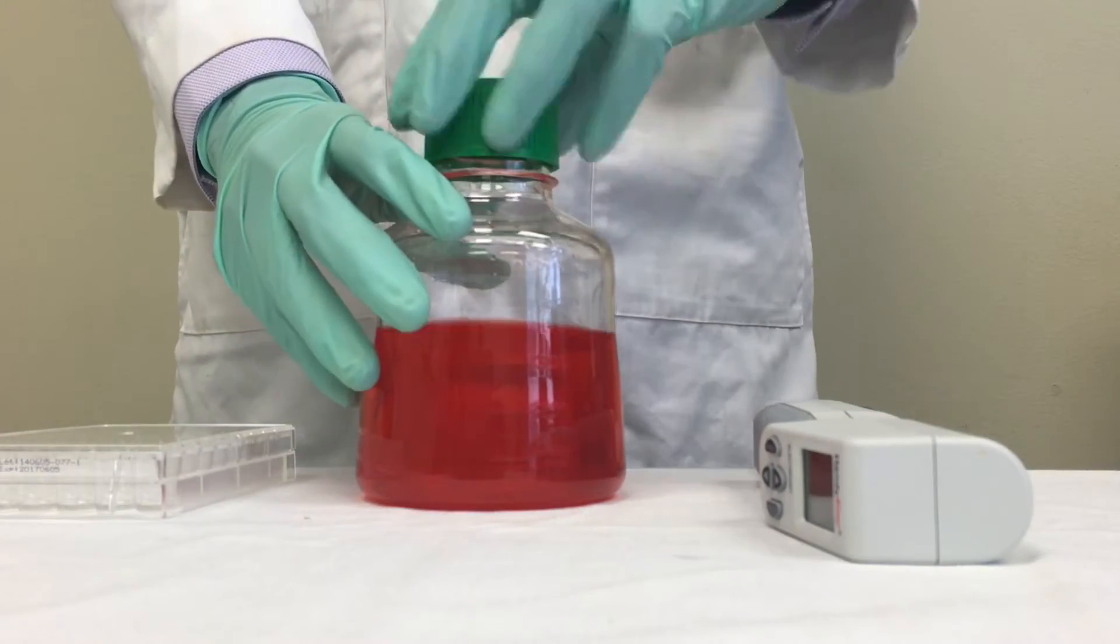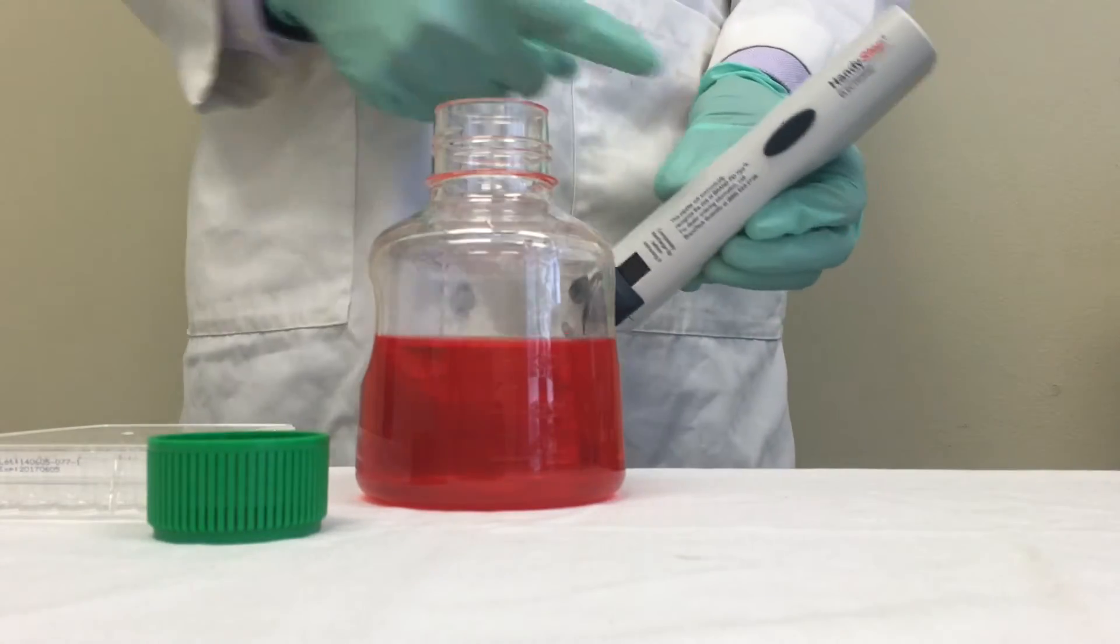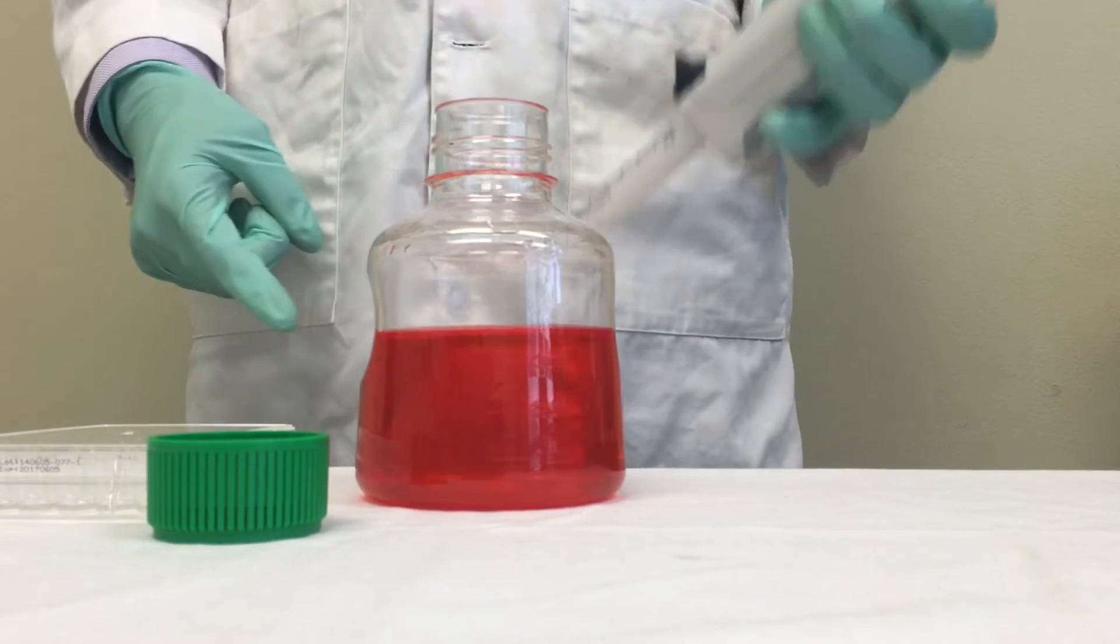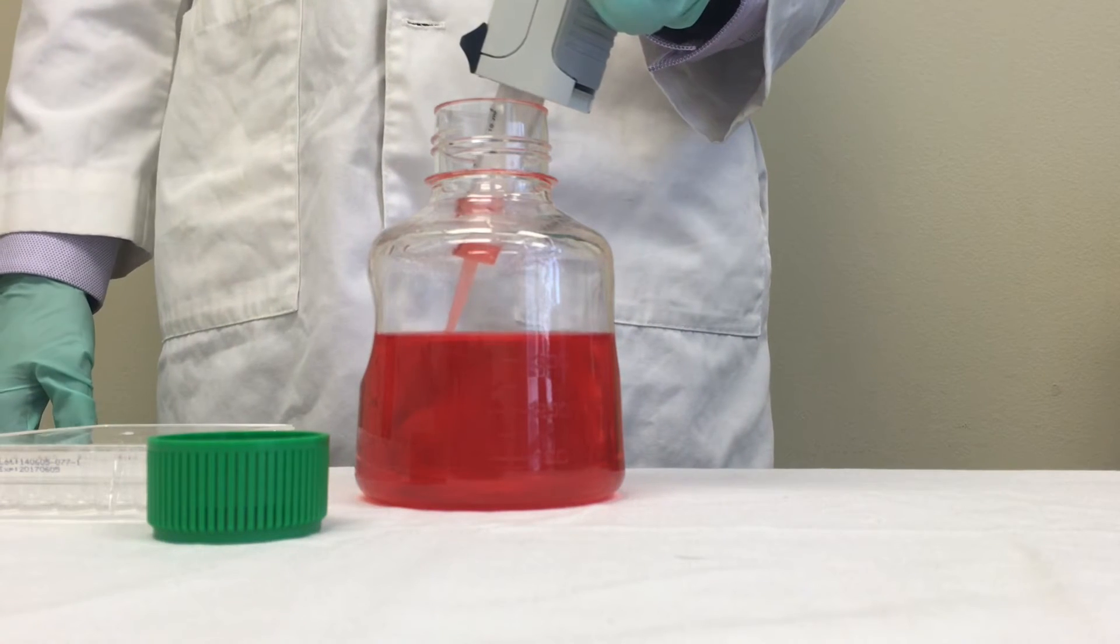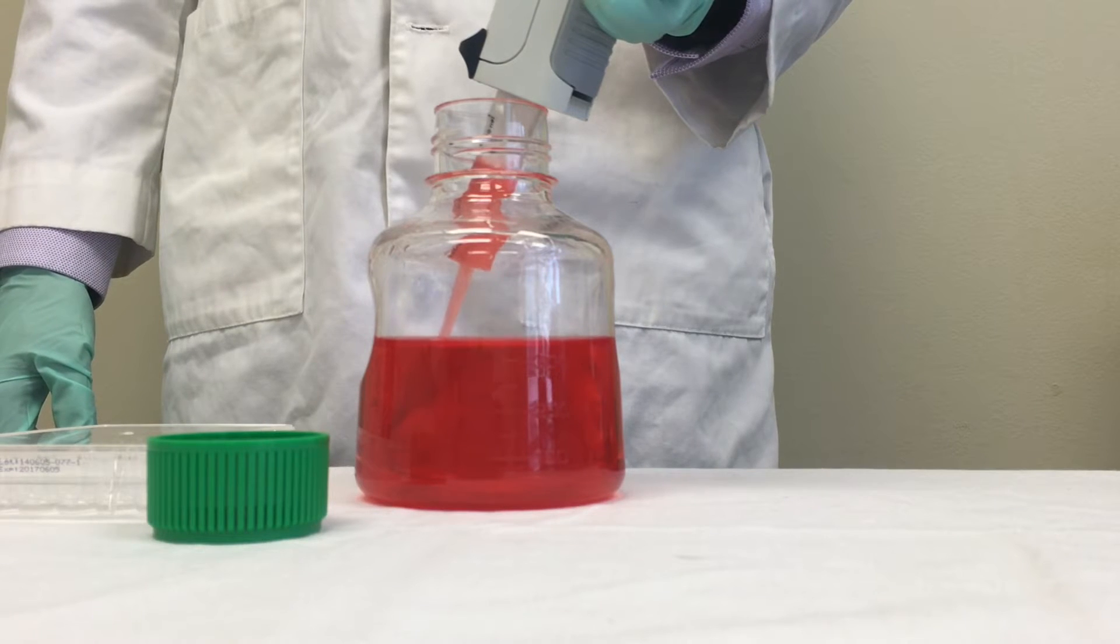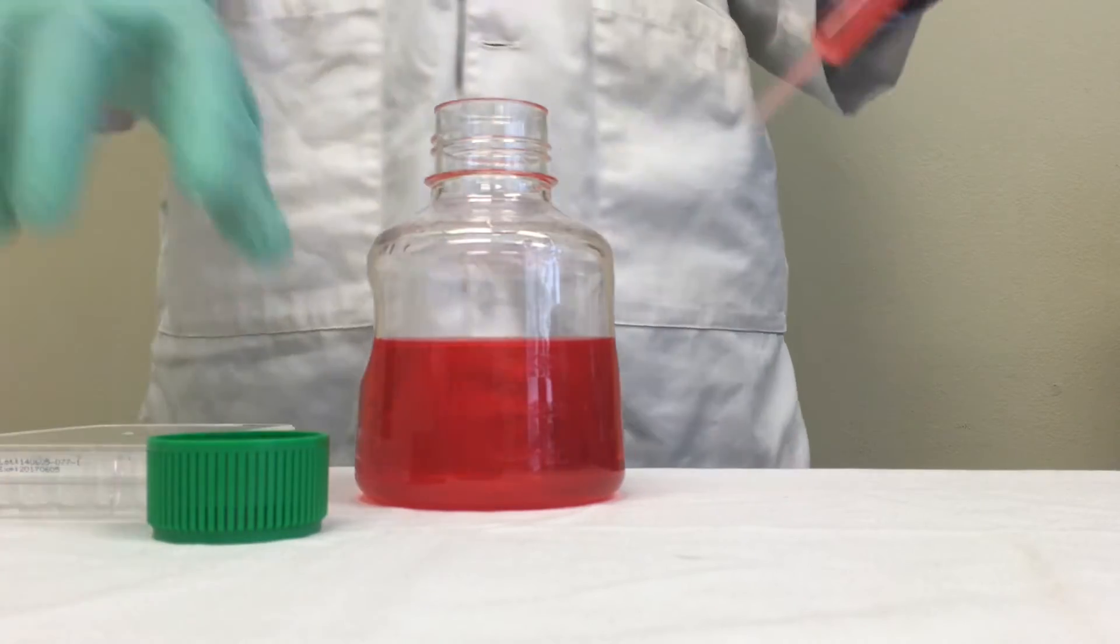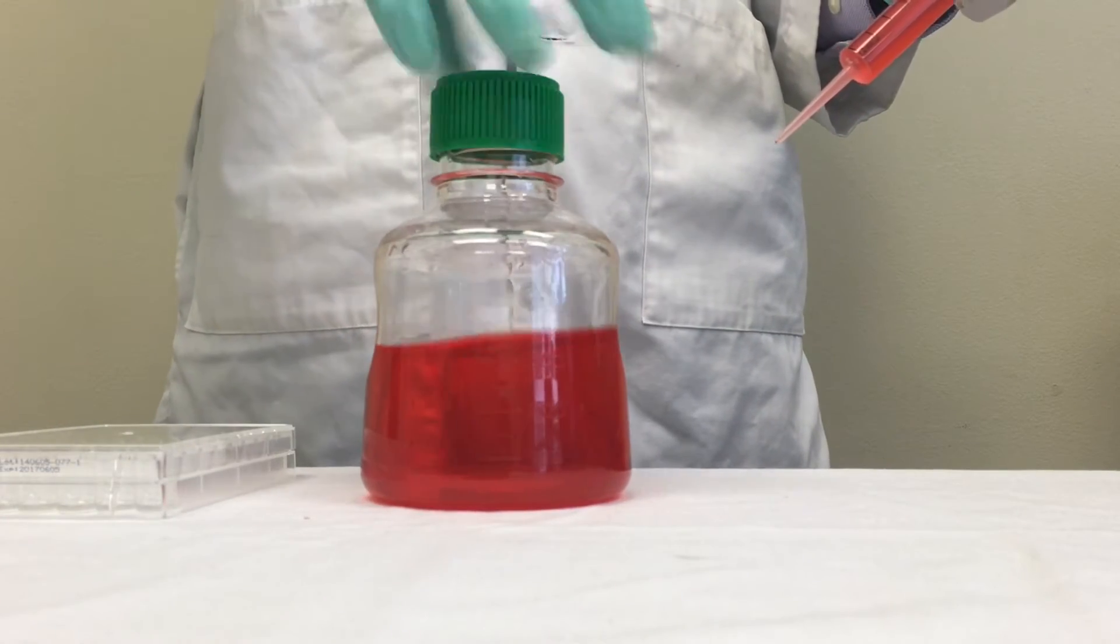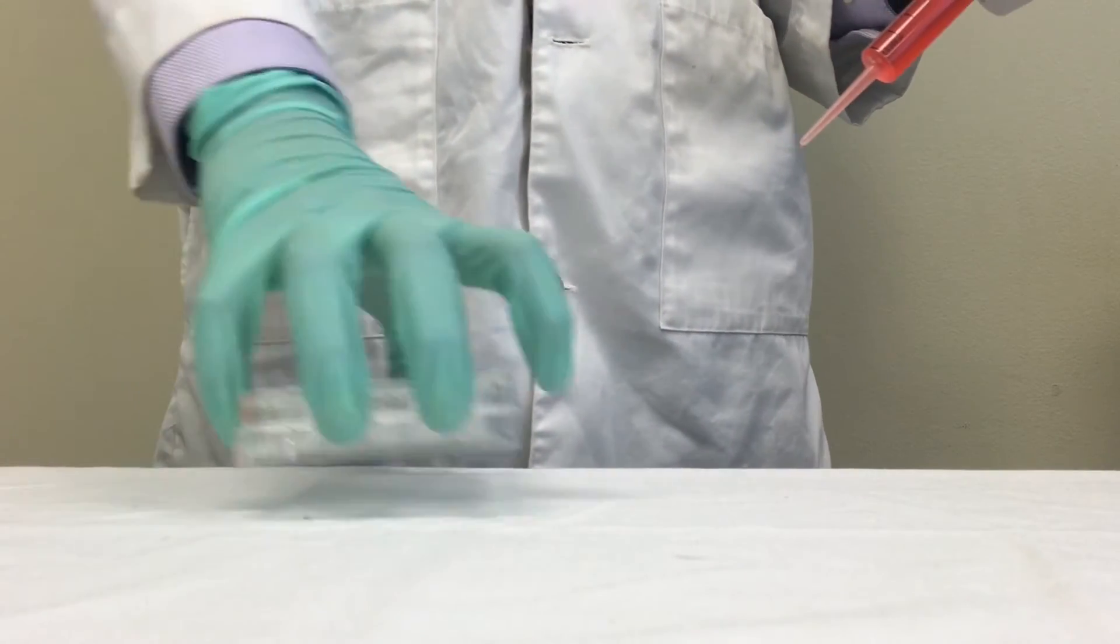To begin aspirating, place the tip of the syringe into the liquid and press the control key one time, and then let the device do all the work. Then, when it is filled up, you can start dispensing.